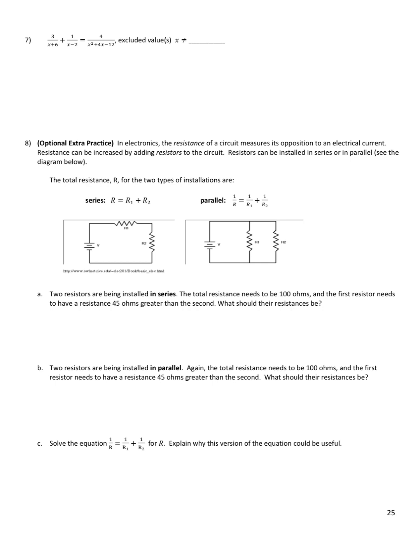Number 7: we have another equation to solve. The excluded values are going to be negative 6 and 2. If you multiply x plus 6 times x minus 2 — first, outer, inner, last — you get x squared minus 2x plus 6x, which is 4x, and 6 times negative 2 is negative 12. So this quadratic denominator is just the product of the two linear factors, and that will be my common denominator. I'm going to multiply both sides by x plus 6 times x minus 2.